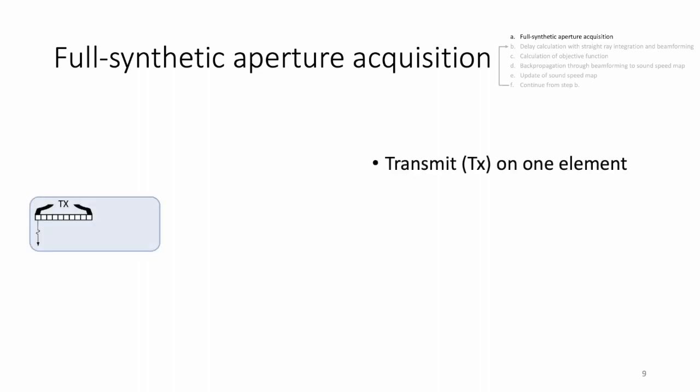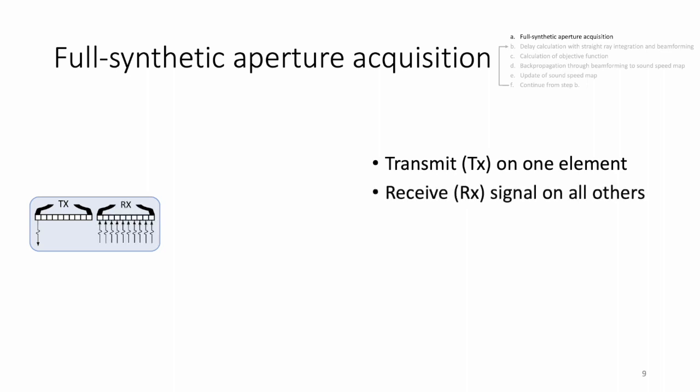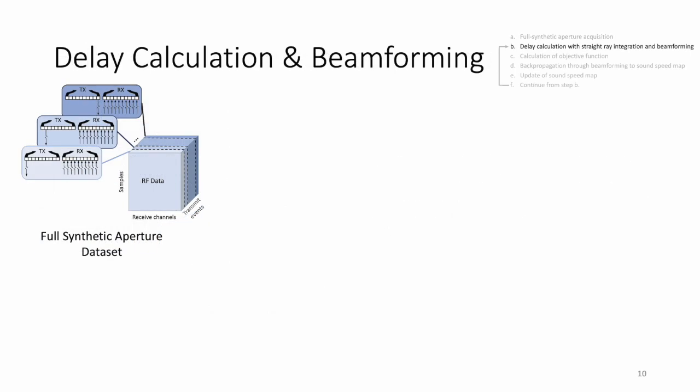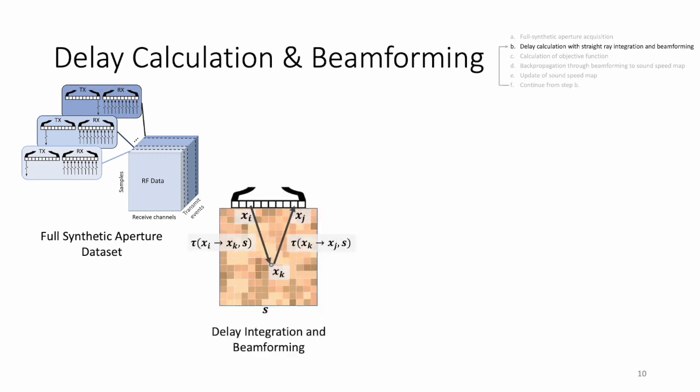A full synthetic aperture transmit sequence consists of transmitting on one element and receiving on the full aperture of elements. This process is repeated for all transmit elements to obtain the radiofrequency data for a single frame. For every transmit and receive element, a straight-ray path is calculated to all pixel locations in the image frame. These paths are used to calculate delays to all pixel locations, which are then subsequently used to sample the received radiofrequency data.